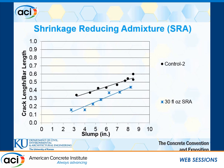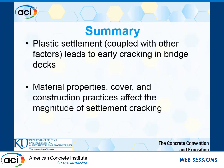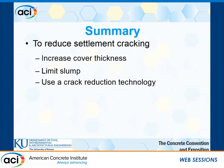Lastly, shrinkage reducing admixture (SRA): we don't have a solid theory yet, but we postulate that SRA causes early-age expansion in concrete by promoting the formation of Portlandite. That expansion may counteract the tensile stress developed by plastic settlement. To summarize: plastic settlement, by itself or combined with other factors, will lead to early-age cracking in bridge decks. Material properties, concrete cover, and construction practices affect the magnitude of settlement cracking. To reduce settlement cracking, you can increase cover thickness, limit maximum slump, and use crack-reducing technologies.